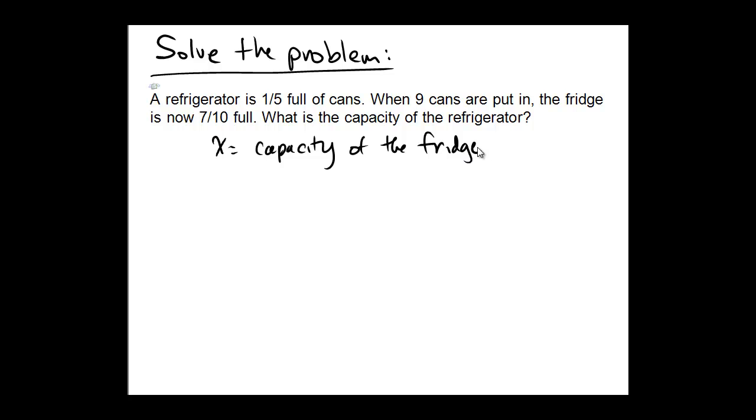This equation would start off with the capacity only being one-fifth full. One-fifth capacity, because the refrigerator is one-fifth full of cans. Then, we put nine in, which would be an adding problem, because we put an additional nine cans into the refrigerator.